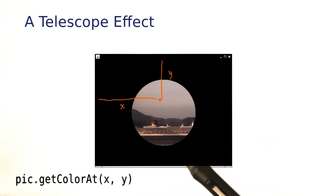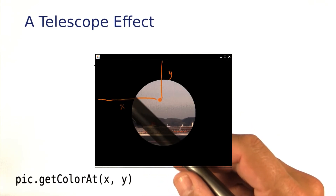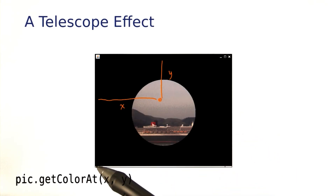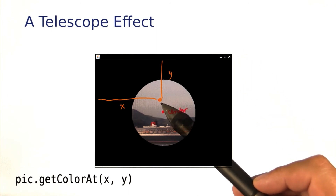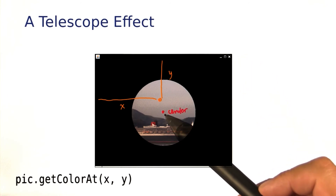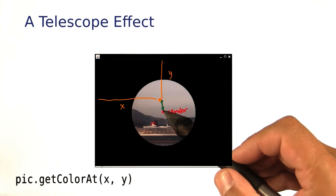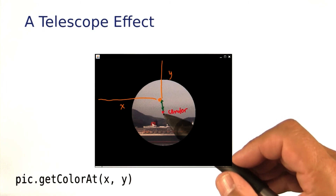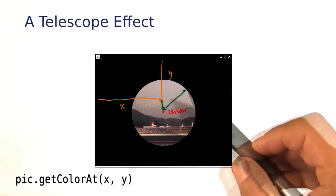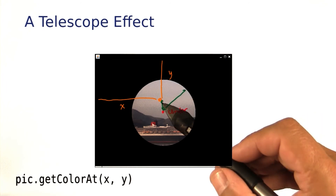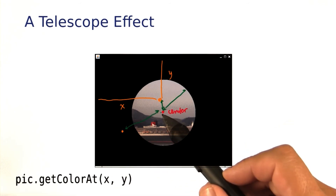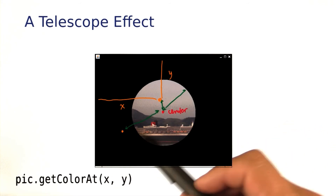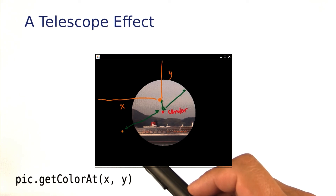To get this effect, we will want to loop through all of the possible x's and all of the possible y's with coordinates x, y, and see how close it is to the center point. If this distance is less than the radius of the circle, then we want to leave the pixel untouched. But for a point out here, where the distance is greater than the radius, we want to color this point black by calling setColorAt.